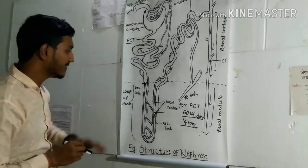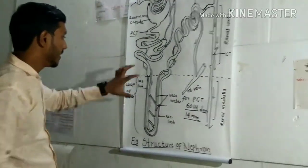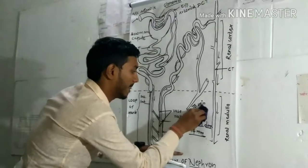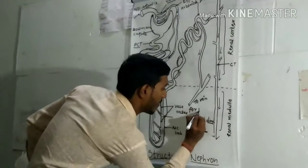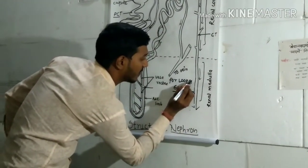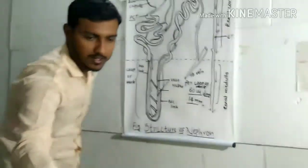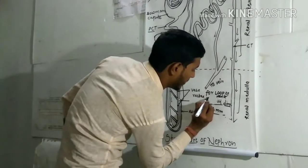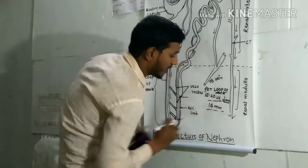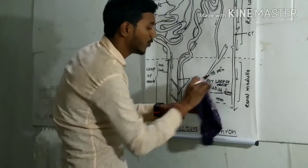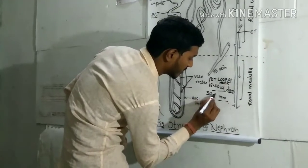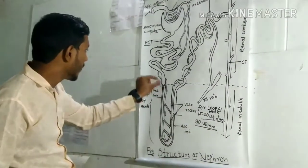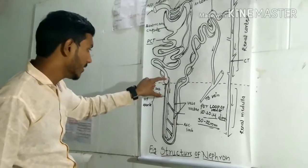From the descending limb through to the ascending limb is the loop of Henle. It has a smaller diameter than the PCT and DCT. For the loop of Henle, the diameter is about 15 to 30 microns and the length is about 30 to 32 millimeters. As you can see, its diameter is smaller than the PCT's 60 microns.